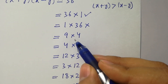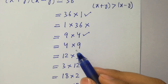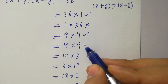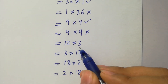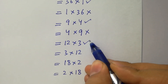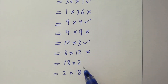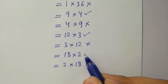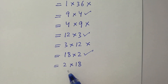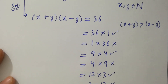9 is greater than 4 — possible. 4 is less than 9 — not possible. 12 is greater than 3 — possible. 3 is less than 12 — not possible. 18 is greater than 2 — possible. 2 is less than 18 — not possible. So we have valid cases here.